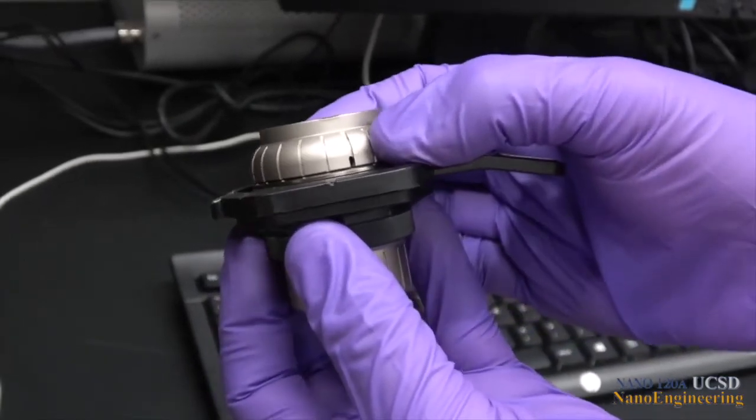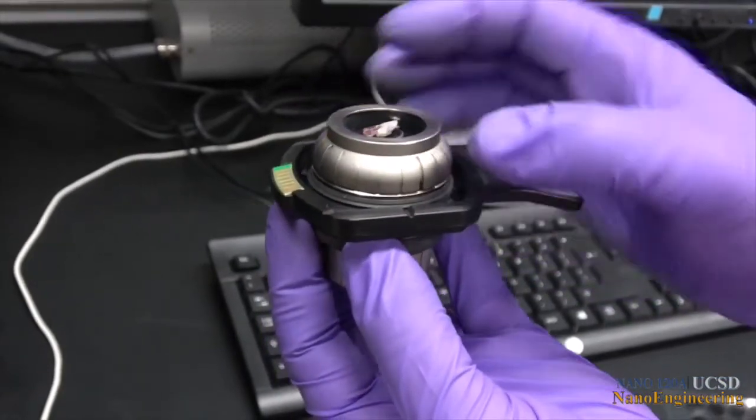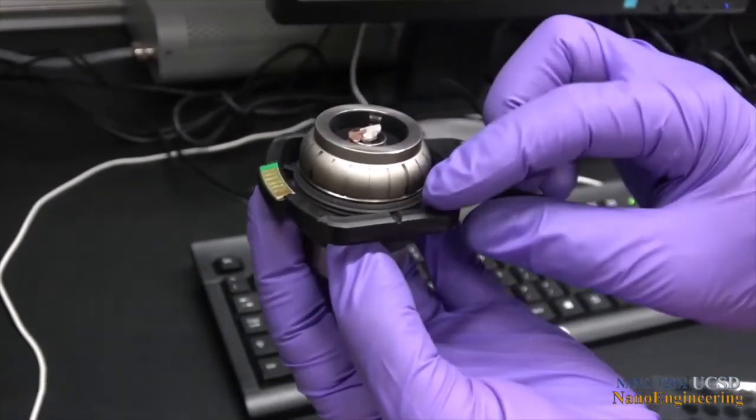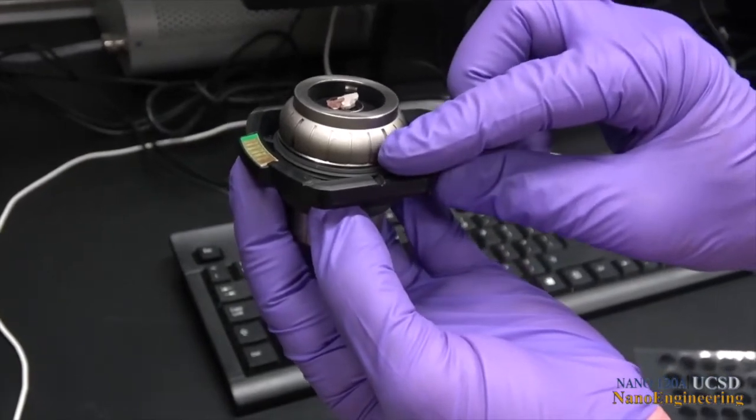Then, turn the bulb four more markings beyond that as measured from the notch on the black ring, to ensure that the sample is sitting below the top ring on the bulb.